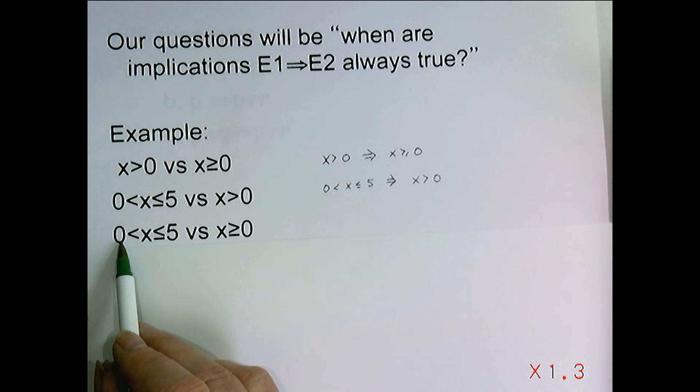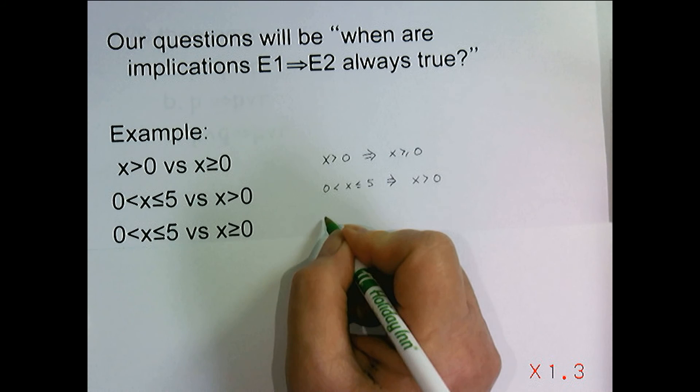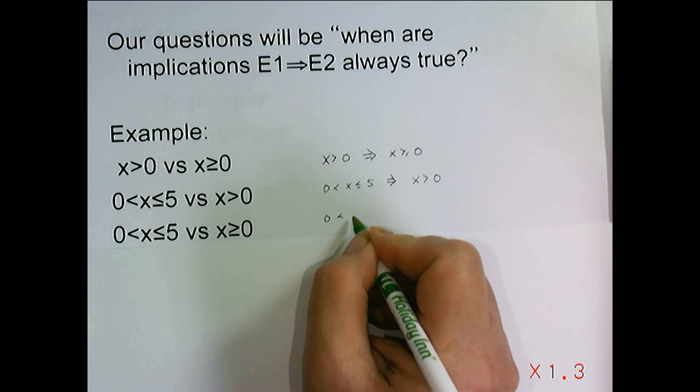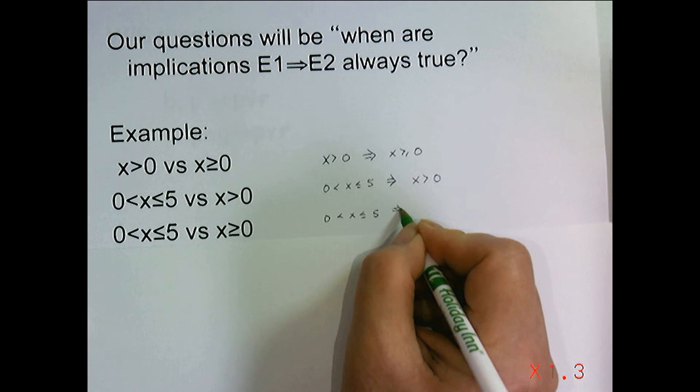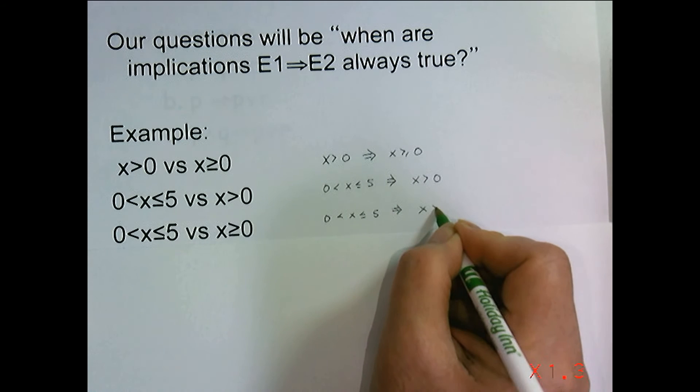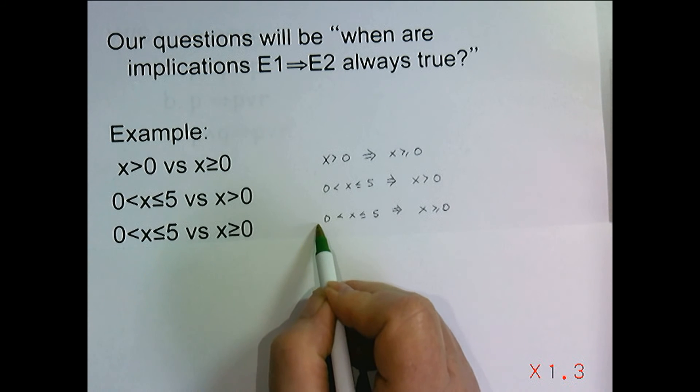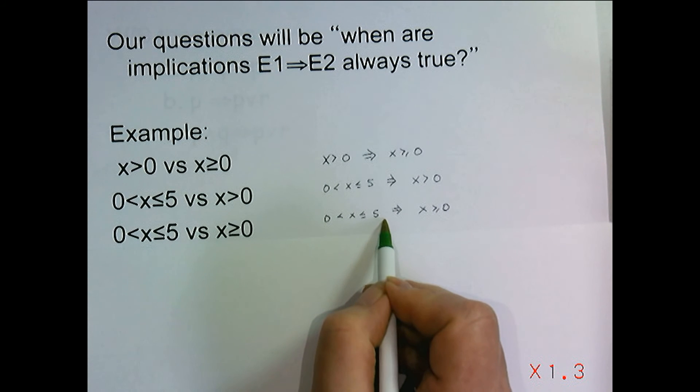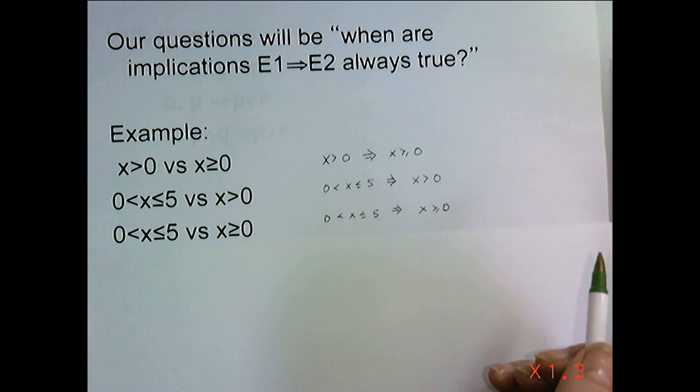What if I want to compare x between 0 and 5, not including 0, versus x is greater than or equal to 0? Well, anytime I pick a number between 0 and 5, not including 0, I will get a number that is greater than or equal to 0. And so again, this expression is stronger than the expression x being greater than or equal to 0.